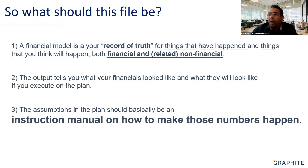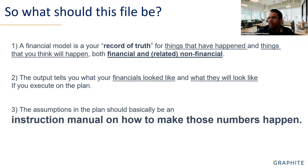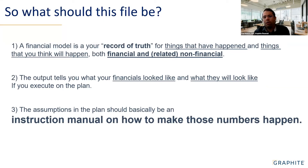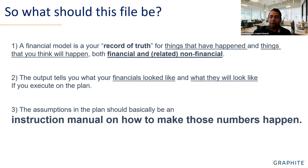Think about it as your record of truth for everything that has happened over at least the last 12 months. I recommend starting maybe at the beginning of 2021 if your company was around, and bringing it out to date, then projecting out a few years. The things that have happened come from your QuickBooks — you export and import them into the model. The things that are going to happen are based on assumptions.